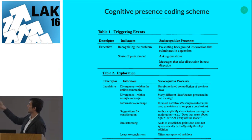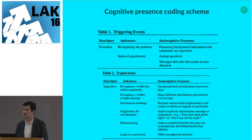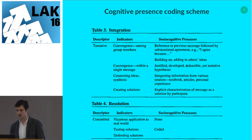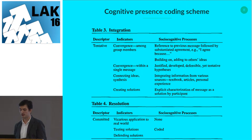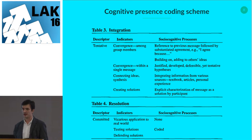Both measurement approaches have challenges. Let me show you how the cognitive presence coding scheme looks. It's very generic — meant for someone who really understands the model. For triggering event: recognizing the problem and sense of puzzlement. For exploration: divergence within the community, information exchange, brainstorming, leaps to conclusions. For integration: convergence among group members, synthesis of ideas, and creating solutions. For resolution: application to real-world problems and testing or defending solutions.